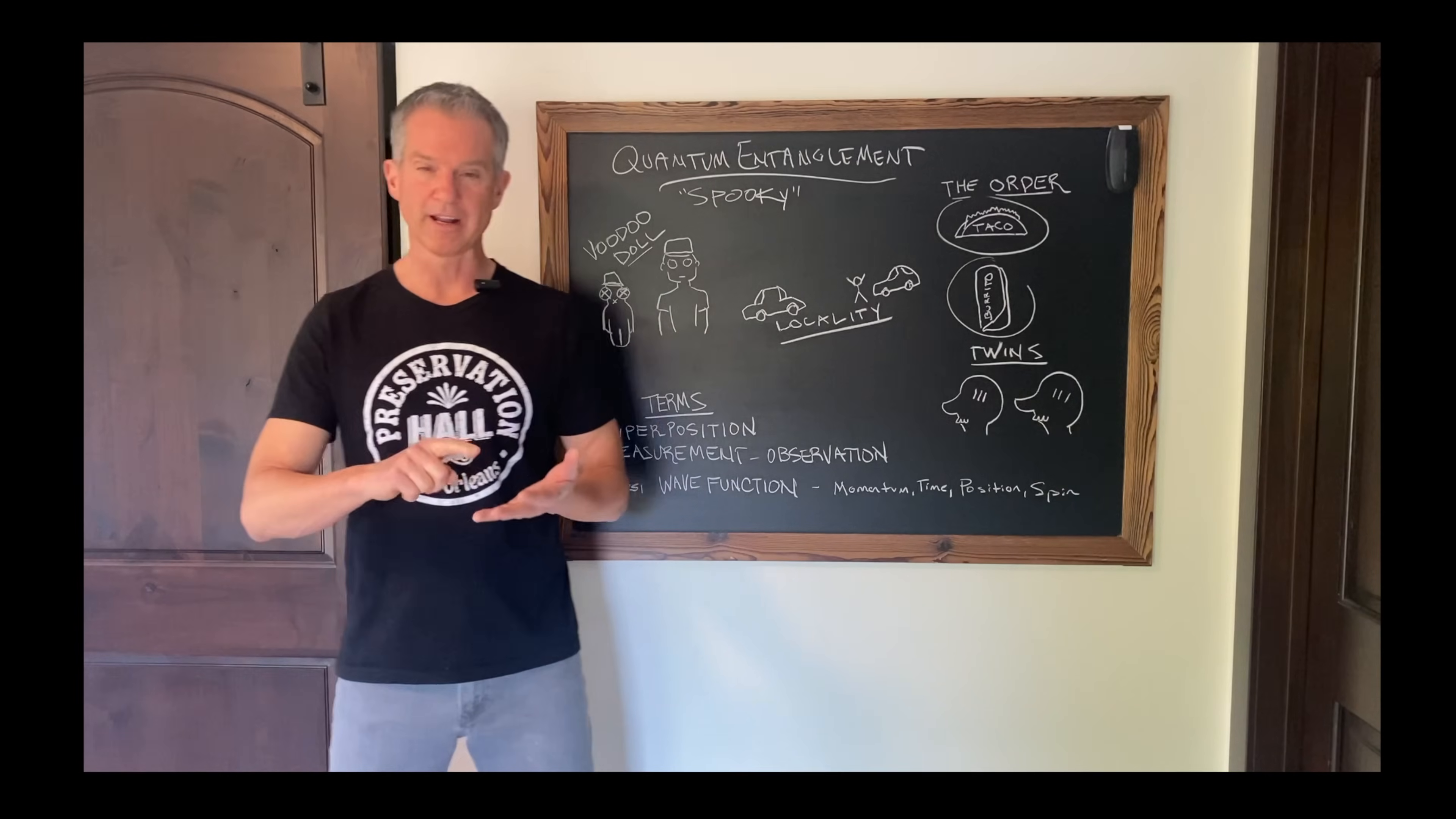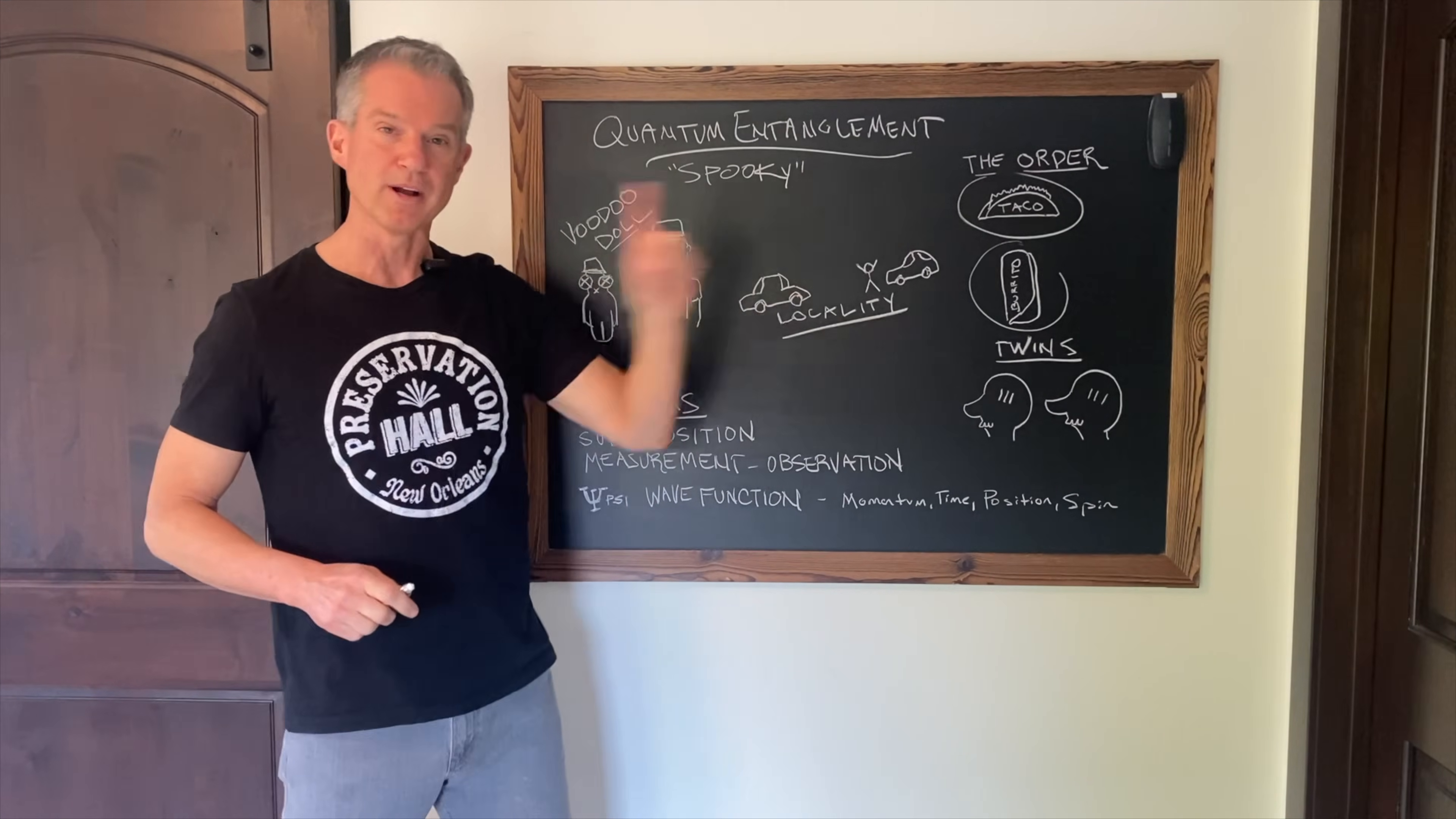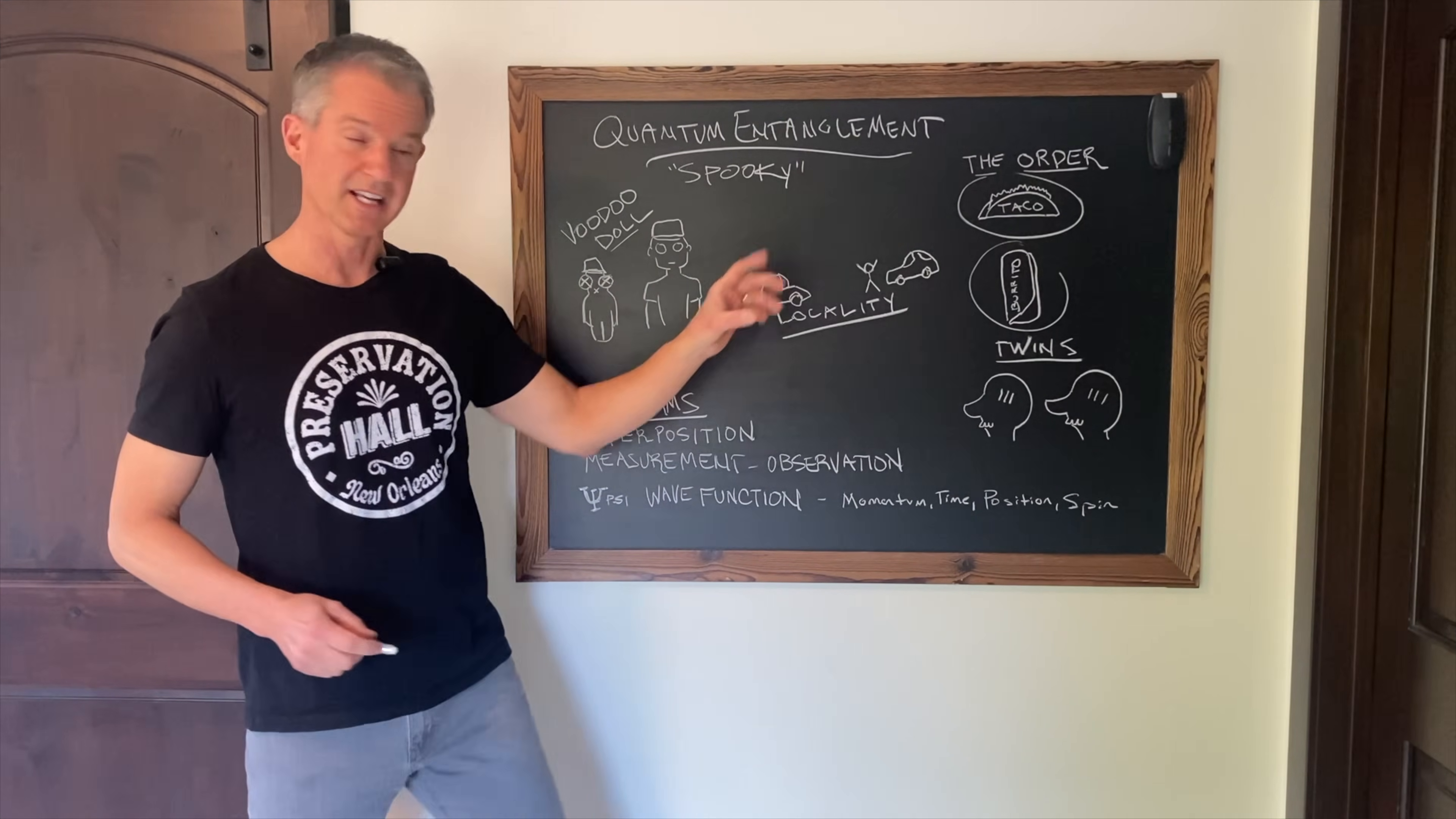You know right then that your friend at his house has the burrito. You don't have to call him on the phone. You don't have to drive to his house. You know right then that he has the burrito. That's because, in a sense, your order is entangled.